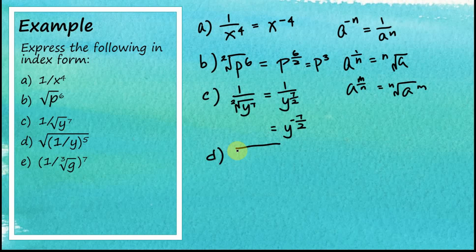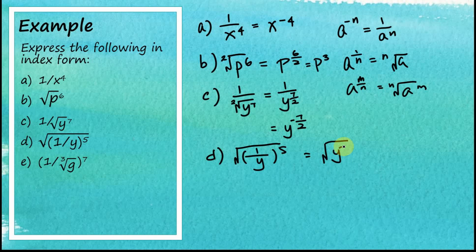Example D: the square root of the square root of (1 over y) to the power of 5. Since 1 over y is the reciprocal of y, using the negative exponent rule, 1 over y to the power of 5 equals y to the power of negative 5. The square root is the root of 2, so this equals y to the power of negative 5 over 2.